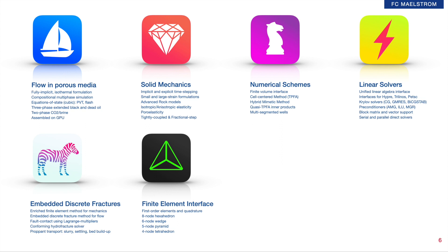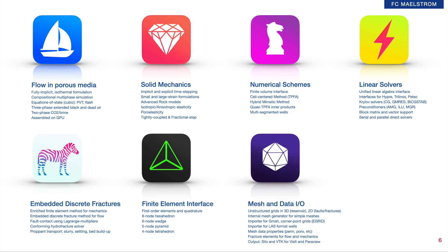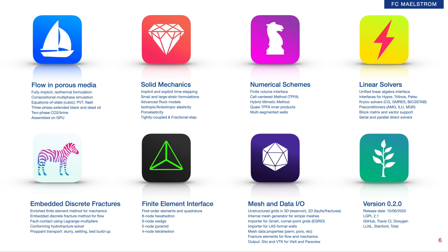Our finite element interface handles most common finite elements, which really allows us to work with a large range of unstructured grid types. And talking of grids, our mesh and data I/O are all based on standard formats. We can connect with meshing packages like GMSH, or more traditional domain tools like Petrel in their cornerpoint grid format. All our 3D outputs are either in silo or VTK formats, which allows us to connect to VisIt and to ParaView. And last, the software is open source, under LGPL 2.1 license.